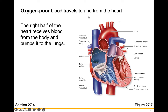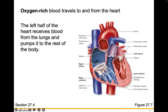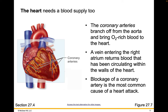The right half of the heart receives blood from the body and pumps it out to the lungs. The left half of the heart receives blood from the lungs and pumps it out to the rest of the body. The heart needs a blood supply too — the coronary arteries branch off from the aorta and bring oxygen-rich blood directly to the heart. Blockage of a coronary artery is the most common cause of a heart attack.